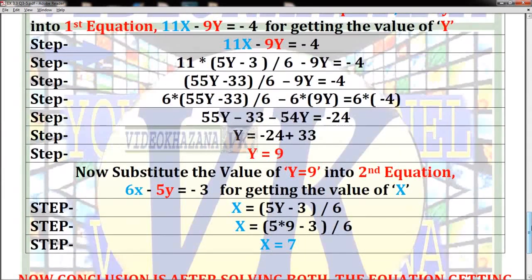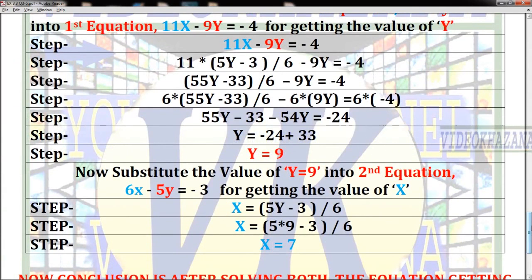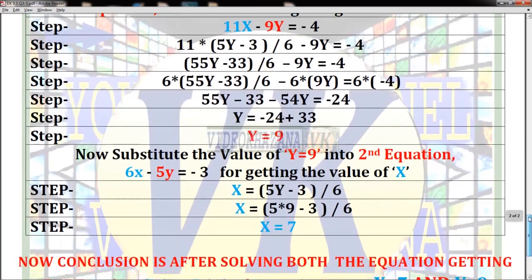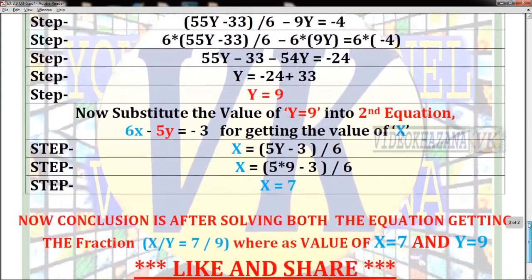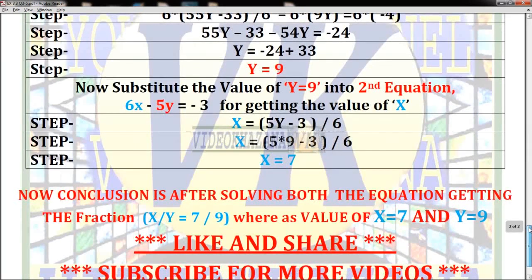The result is y = 9. Now substitute the value y = 9 into the second equation, 6x - 5y = -3, for getting the value of x. Here are the steps.